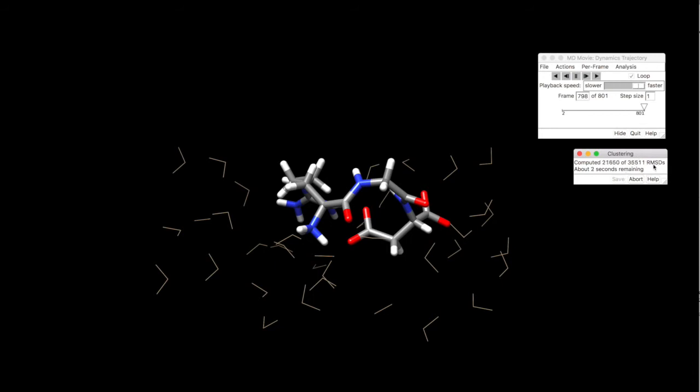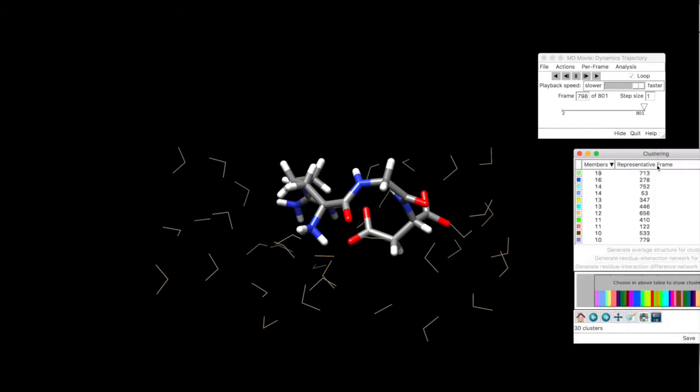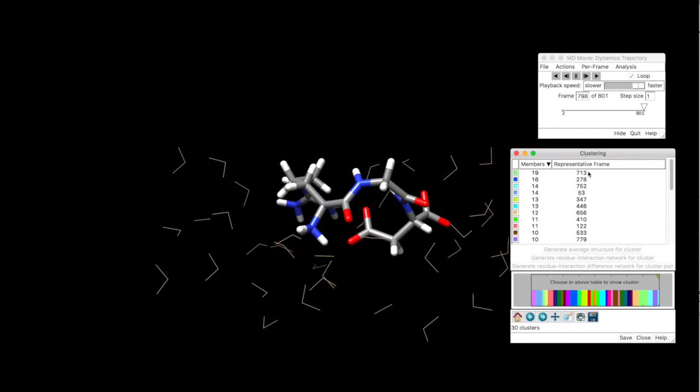So it's going into clustering. It will calculate all the RMSDs. And the lowest RMSDs in each particular cluster will be grouped together to give you representative structure.